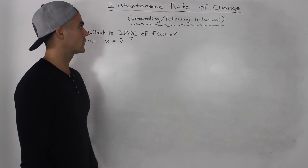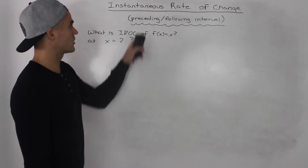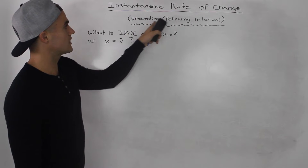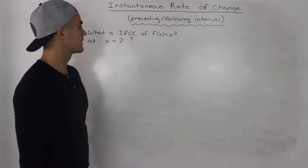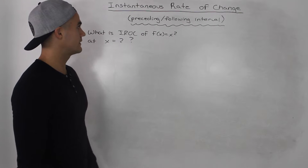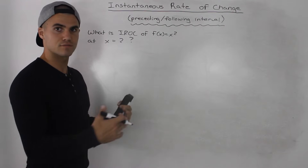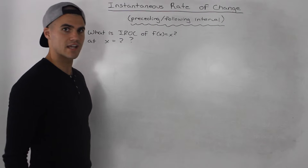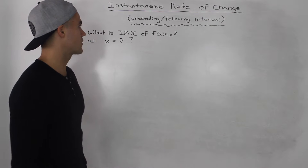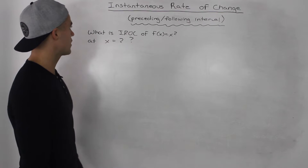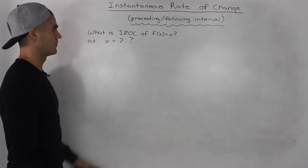In this video we're going to talk about a method called the preceding and following interval method, which is a method to find the slope of the tangent that we discussed in the previous video. Let's start off with an example.